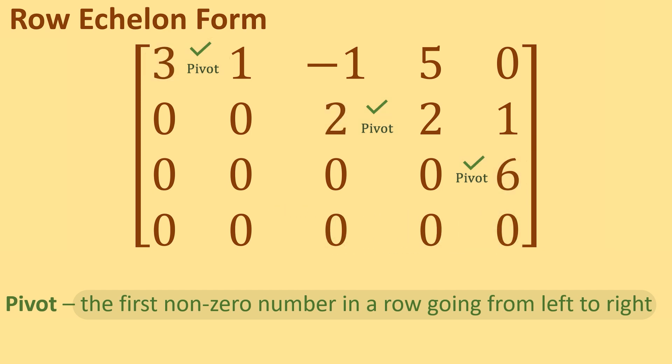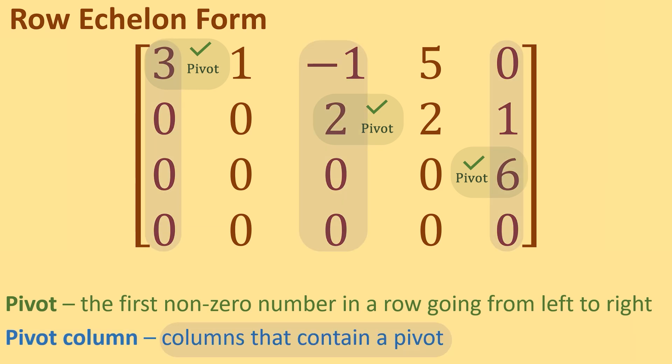We've found all our pivots. Pivot columns are columns that contain a pivot. Our pivot in row 1 is in column 1, so column 1 is a pivot column. Our pivot in row 2 is in column 3, so column 3 is a pivot column. Our pivot in row 3 is in column 5, so column 5 is a pivot column. We've found our pivots and pivot columns in this matrix that is in row echelon form.